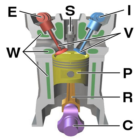The term internal combustion engine usually refers to an engine in which combustion is intermittent, such as the more familiar four-stroke and two-stroke piston engines, along with variants, such as the six-stroke piston engine and the Wankel rotary engine.